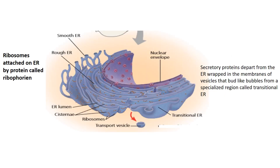The endoplasmic reticulum has two important types: rough endoplasmic reticulum and smooth endoplasmic reticulum. Rough ER is near the nuclear membrane and arises from the outgrowth and blebbing of the nuclear membrane having ribosomes. Ribosomes are attached to the endoplasmic reticulum by a protein called ribophorin. When ribosomes are attached to the ER, it is called rough endoplasmic reticulum. The cisternae of the ER have an internal lumen and cavity.